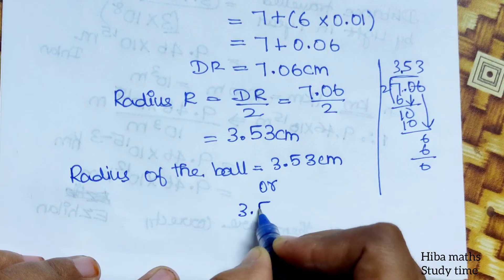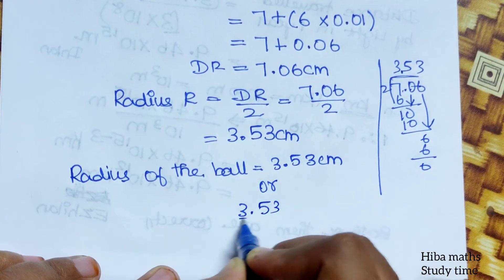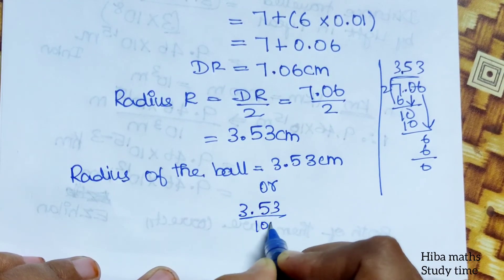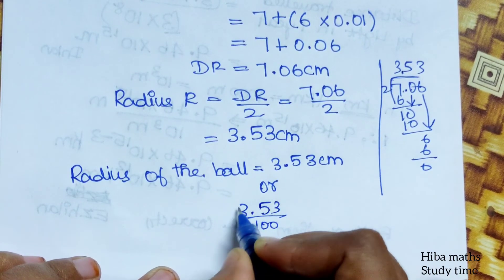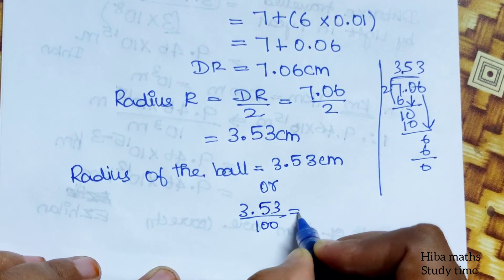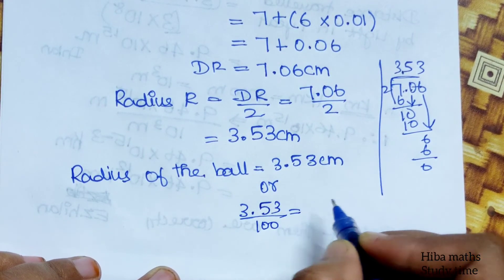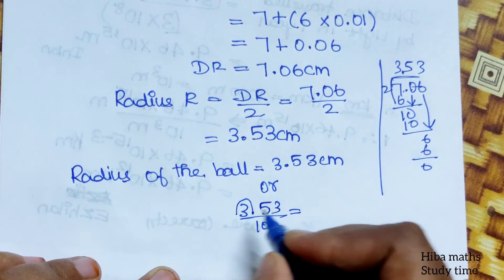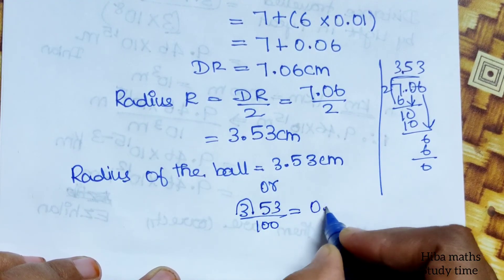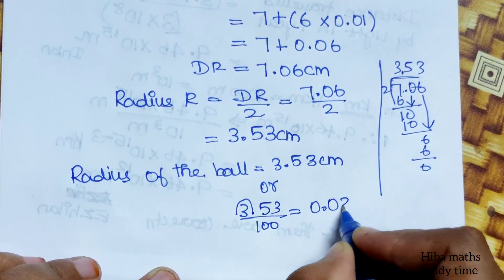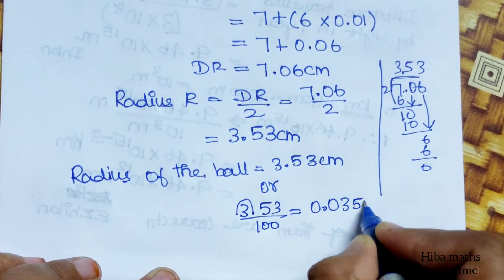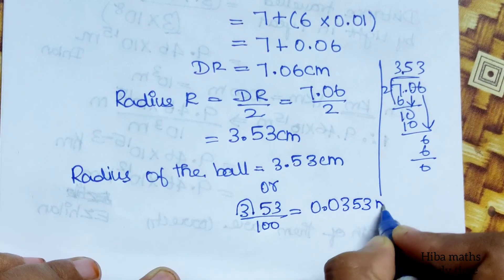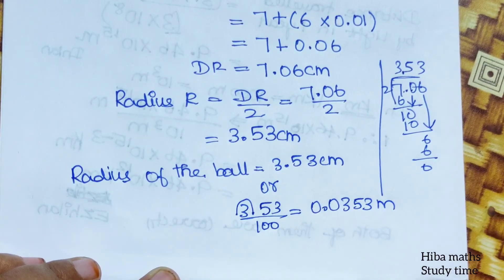Converting to meters: divide by 100. So 3.53 cm divided by 100 gives 0.0353 meters. Thank you so much for watching.